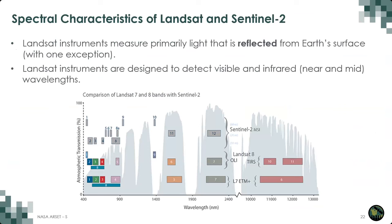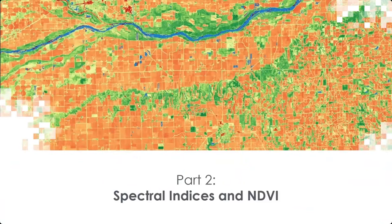Here you can see a comparison of the bands of Landsat 7, 8, and 9, and Sentinel-2. For Landsat 8 and 9, those sensors have 11 bands where data are collected. Band 2 is blue, band 3 is green, band 4 is red, and so on. The gray parts of this figure are called the atmospheric windows, where the satellite can actually collect reflected energy from the ground. Now that we understand what types of information are being collected, let's talk about how to use that information through spectral indices.